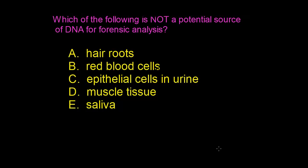Hi, in this video I want to show how to solve a genetic forensic problem. So here is a question: which of the following is not a potential source of DNA for forensic analysis? I will read the answers aloud so you may have time to choose the correct answer. So: A, hair roots; B, red blood cells; C, epithelial cells in urine; D, muscle tissue; and E, saliva.